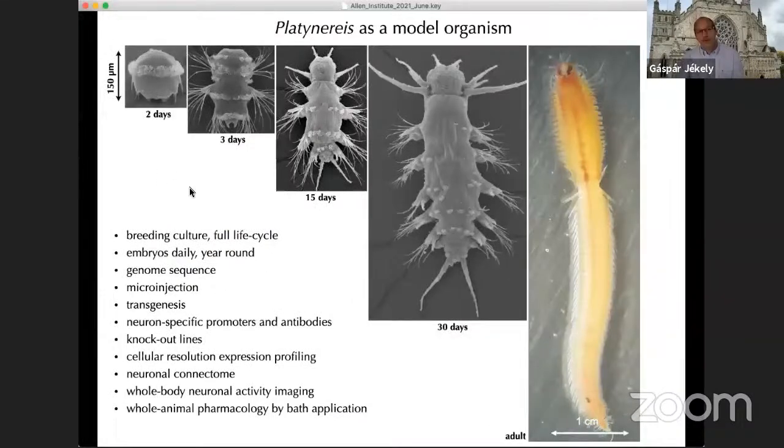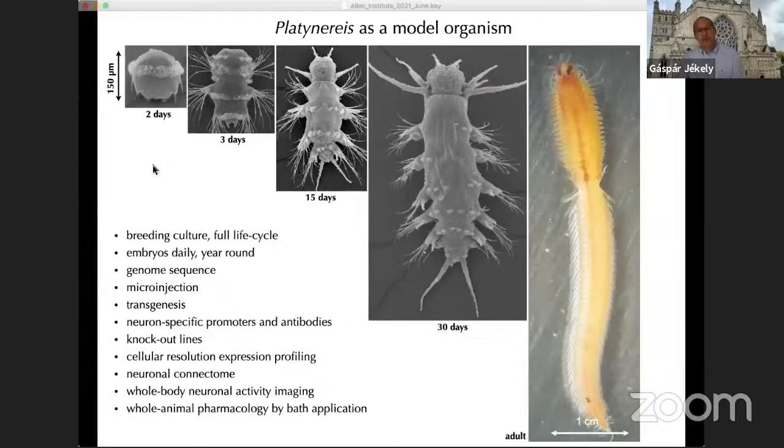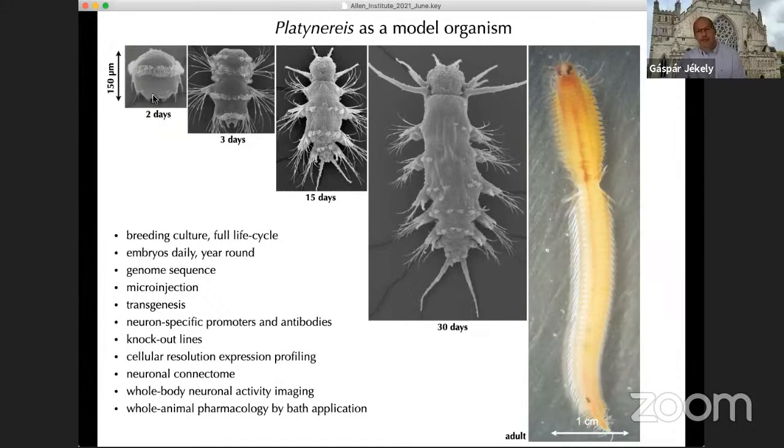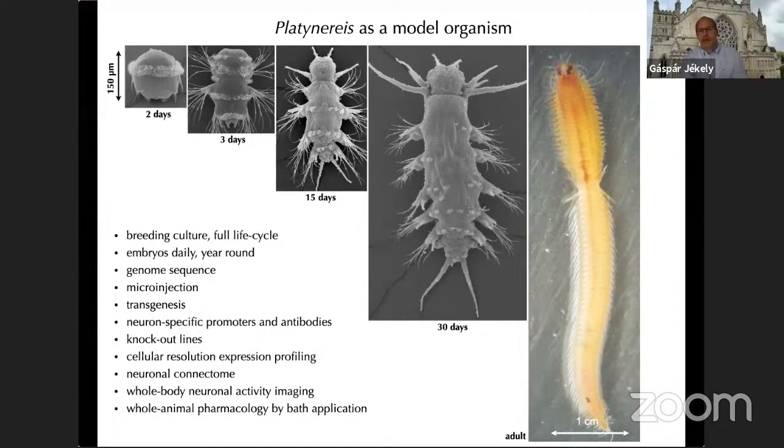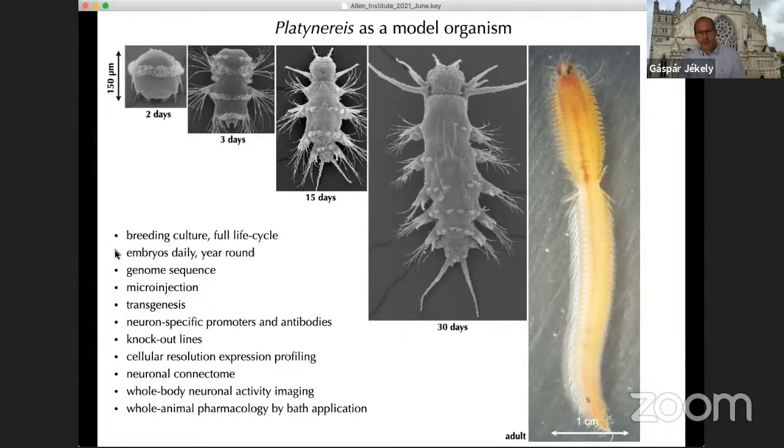This is one of the motivations why we are working on a small organism: these tiny larval stages of Platynereis, this marine worm. These are only a few hundred microns in length, but they already have a developed nervous system with thousands of neurons and various behaviors. The advantage is that it has become a powerful laboratory organism in the last decade. There is a very stable breeding culture, we can have the full life cycle, we can obtain embryos daily year round. There's genome sequence, microinjection, transgenesis, neuron-specific promoters, knockouts with CRISPR and other methods.